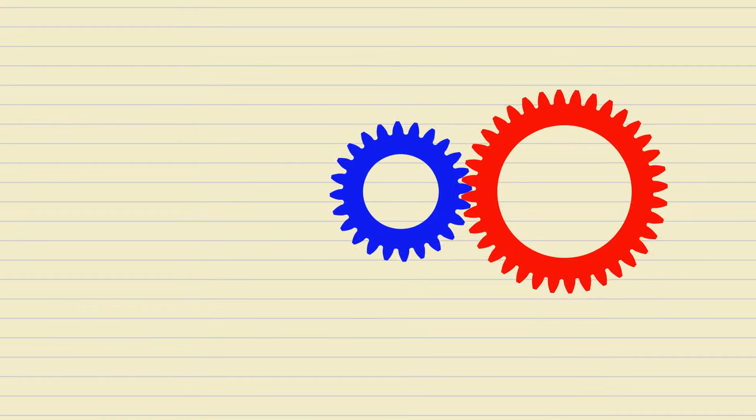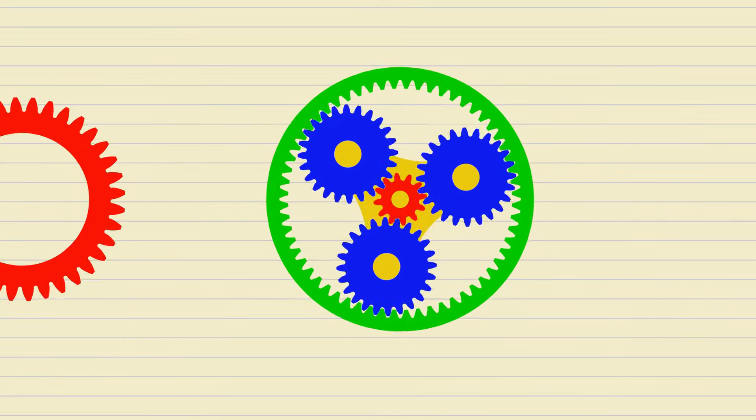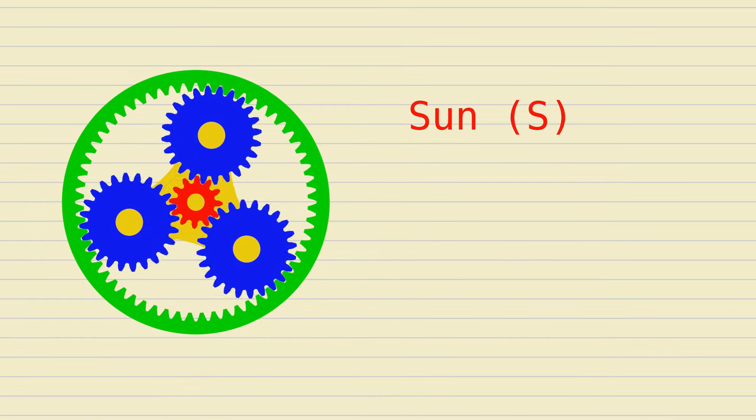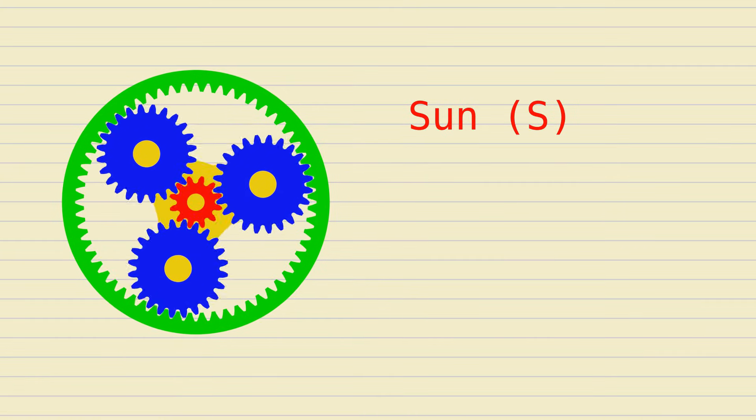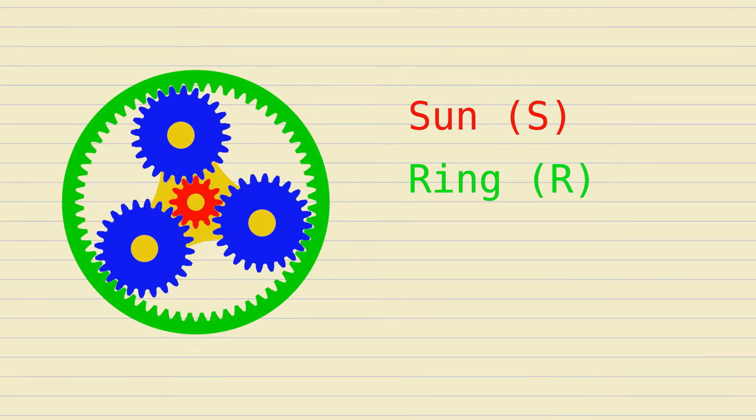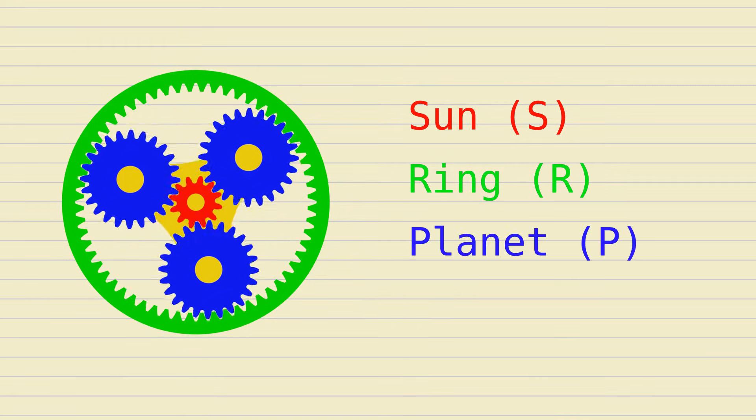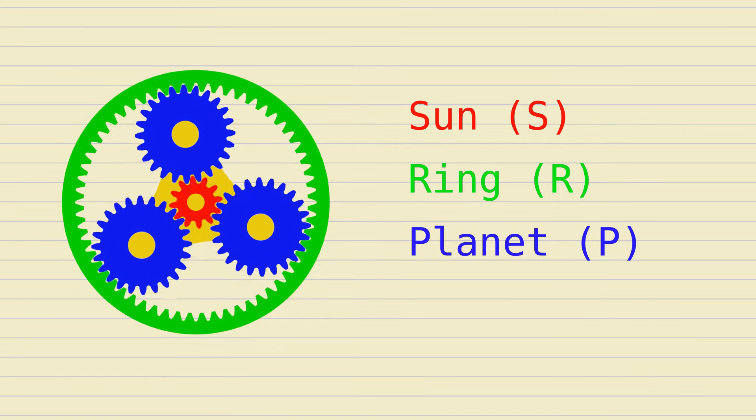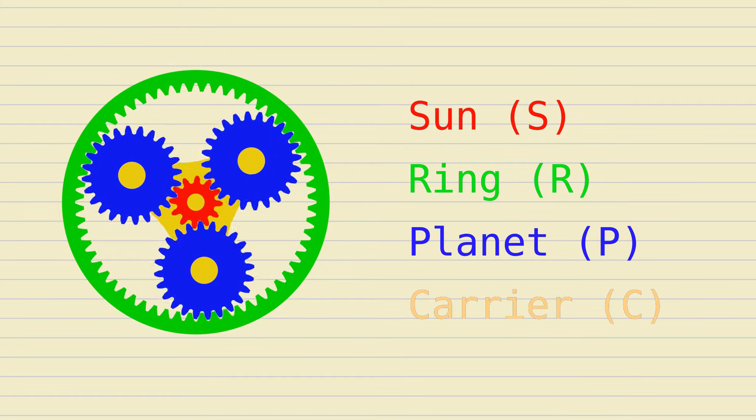Let's now look at the planetary mechanism. There are four components. The center gear is called the sun gear. The outer gear with its teeth pointing inwards is called the ring gear. The gears meshing with the sun and ring gears are called planet gears. The spinning platform on which the planet gears are mounted is called the carrier.